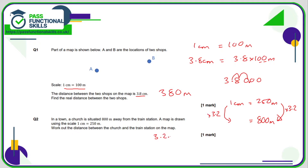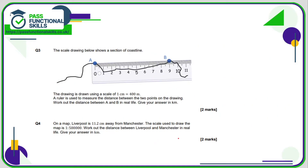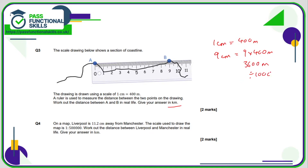Question three: A to B is 9 centimeters. If 1 centimeter equals 400 meters, then 9 centimeters on the map equals 9 times 400 meters in real life. Nine fours are 36, so that's 3600 meters. We need the answer in kilometers, so divide by 1000: the answer is 3.6 kilometers.